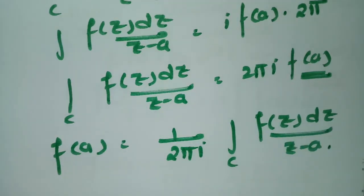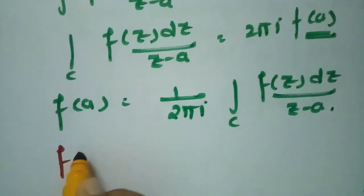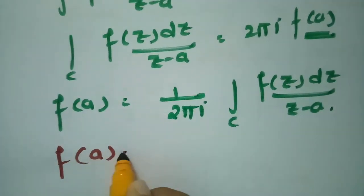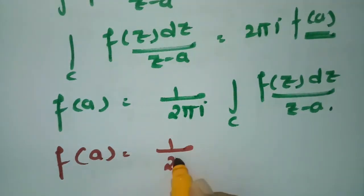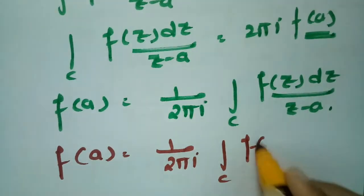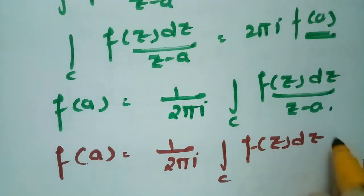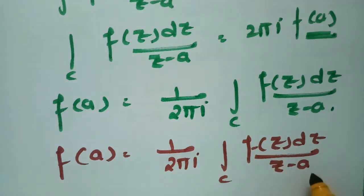So this is what we have been asked to show: if f of z is analytic within and on the closed contour, and z equal to a is a small point within the contour, then the function at a equals 1 by 2 pi i times of integral c of f of z dz by z minus a. This is how we have shown it.